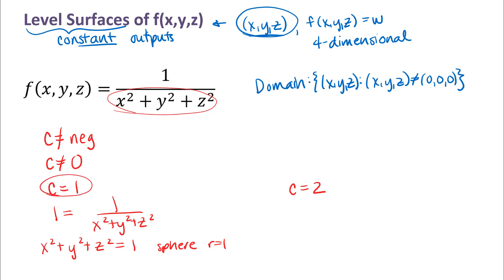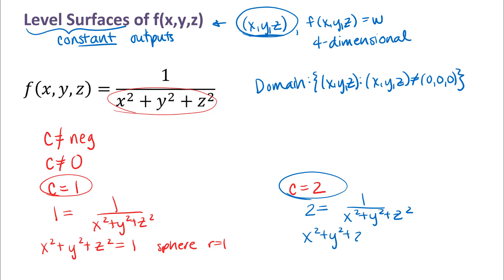I'm also going to think about when c = 2. So we'll have two in for the output of the function. When I multiply both sides by x² + y² + z², and then divide both sides by two, I get x² + y² + z² = 1/2. So that one is a sphere with center at the origin and a radius of √(1/2) = 1/√2, or rationalized as √2/2 — approximately 0.7 for the radius of that sphere.